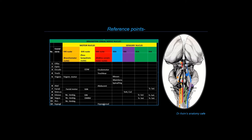Then you can see the cranial nerve nuclei which have been overlaid on the brainstem. These cranial nerve nuclei have been color-coded to match the colors of the columns in the table. The motor columns have been shown in red, yellow, and orange, corresponding with those colors in the table. The sensory columns have been color-coded as blue, purple, and green, corresponding with the blue, purple, and green columns in the table.